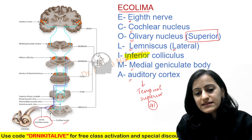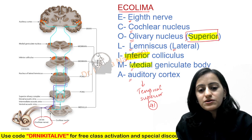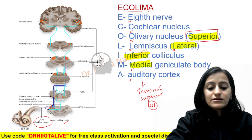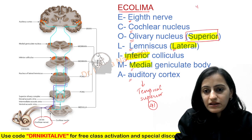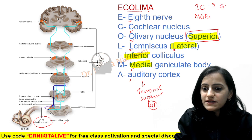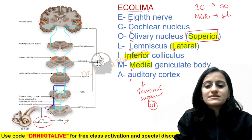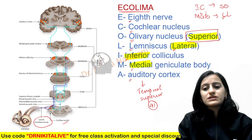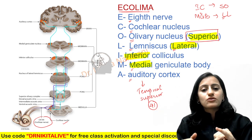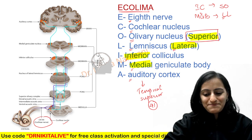An important point to note: the colliculus is inferior but the olivary nucleus is superior; the geniculate body is medial but the lemniscus is lateral — so these are opposite pairs. In summary, the auditory pathway includes the superior olivary nucleus, inferior colliculus, medial geniculate body, and lateral lemniscus.